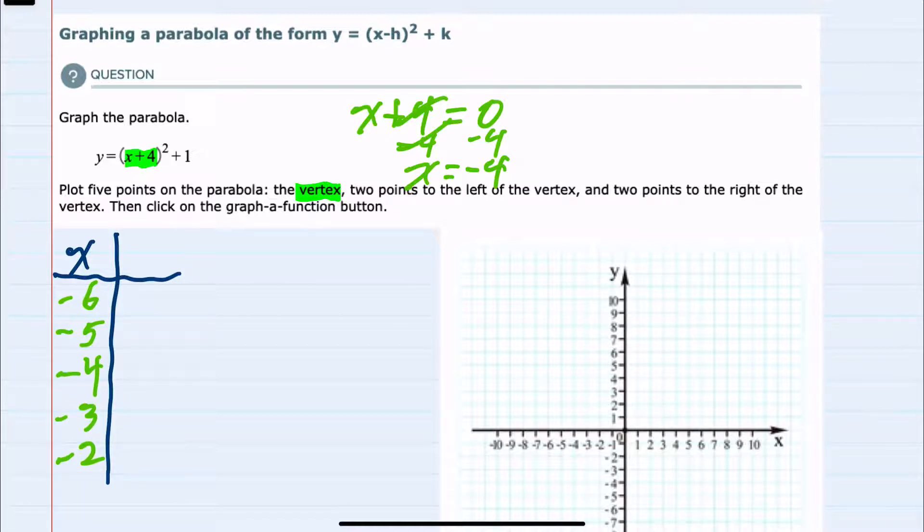In this case, I will start at the top with -6. If I plug -6 in for x, I would have y = (-6 + 4)² + 1. Order of operations says work inside the grouping symbols first, so inside the parentheses, this would be -6 + 4, which is -2 squared plus 1.